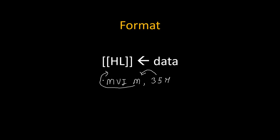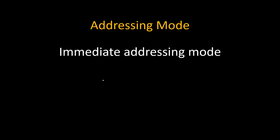We will see a detailed example to understand it more clearly. Now let's talk about addressing mode. The addressing mode of every instruction depends on its operand. We can see the operand here is data — MBI M, data. Whenever data is in the operand, its addressing mode becomes immediate addressing mode. This immediate data gets copied inside the register, that's why the addressing mode is immediate addressing mode.